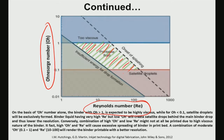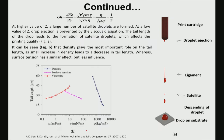Binder properties are very important. A binder with an optimum combination of Ohnesorge number and Reynolds number can be printed. The binder formulation needs to be tailored accordingly — for example, the Ohnesorge number should vary between 0.1 and 1, while Reynolds number can vary between approximately 5 to 200–300. Within that range is what is called the printable fluid regime.